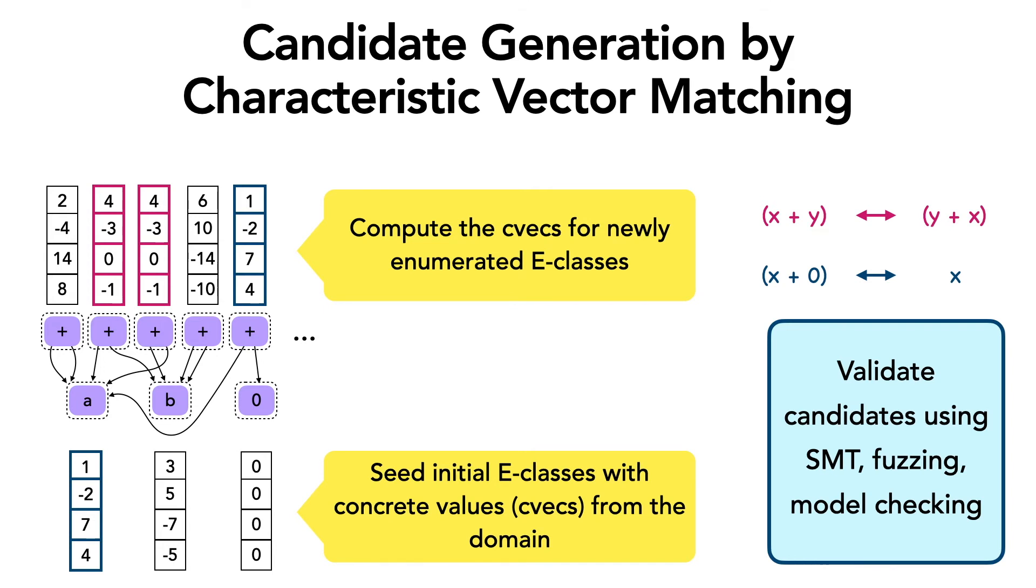So once the candidates are found, Ruler supports the use of various techniques to verify or validate the rules depending on the domain. For example, you can use model checking for smaller domains, SMT for domains that have supported theories, or even fuzzing.